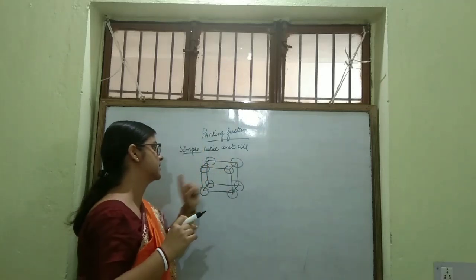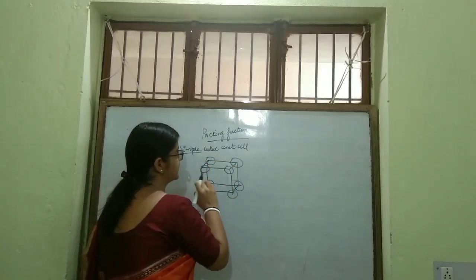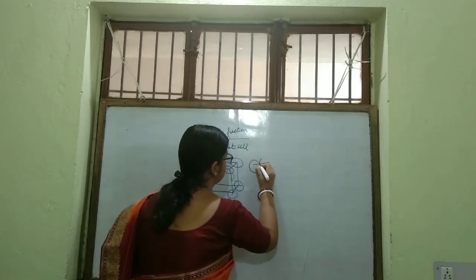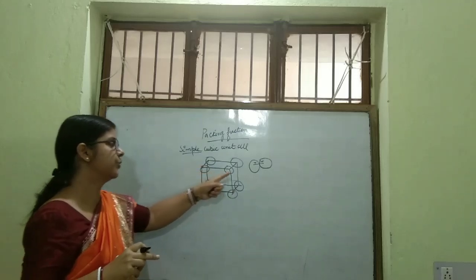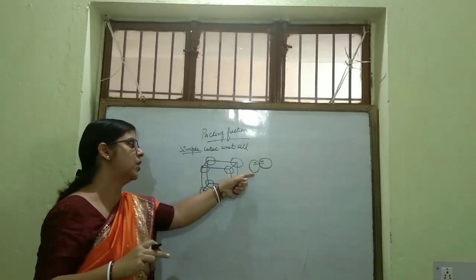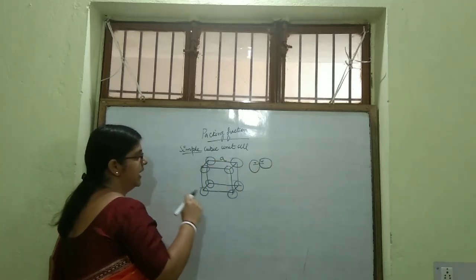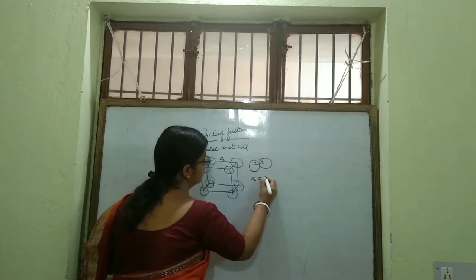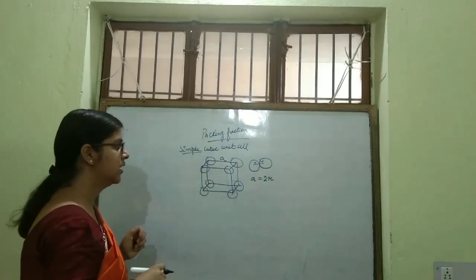Here you see the spheres shown at the corners of the edges. These spheres are actually touching each other, though I could not show it in this figure. Both spheres will be of equal size. So here, A is equal to 2R. The edge length A is equal to 2R.